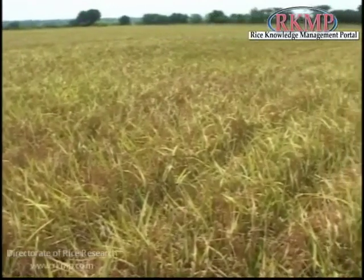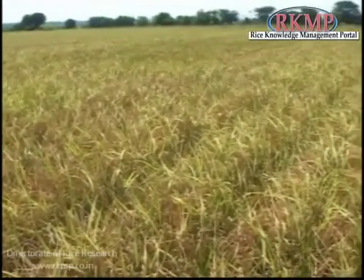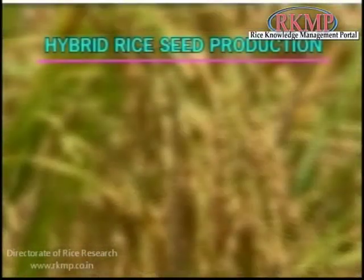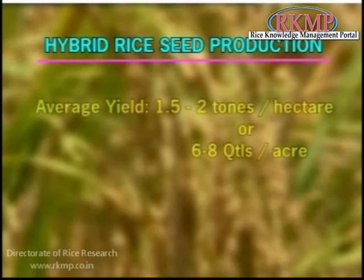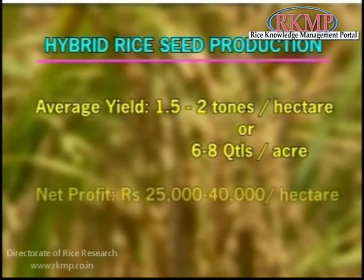Hybrid seed production is quite profitable. The average yield of hybrid rice seed now obtained is between 1.5 to 2 tons per hectare, which is 6 to 8 quintals per acre. The seed producer can procure a net profit of 25,000 to 40,000 rupees per hectare.